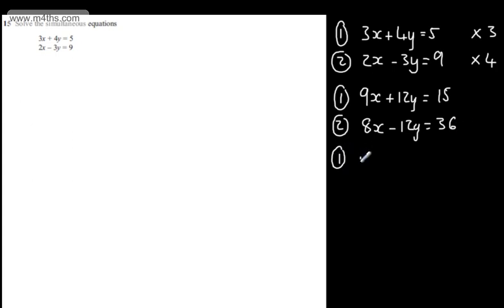I'm going to do 1 plus 2. If I add these equations, it's going to eliminate the y's, and that's going to give me that 17x is going to be equal to 15 plus 36, which is 51.